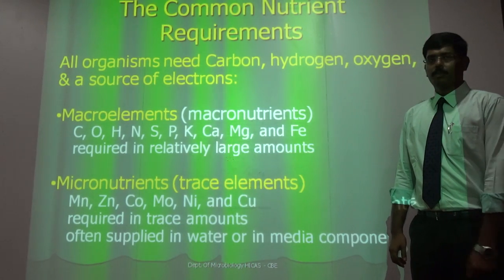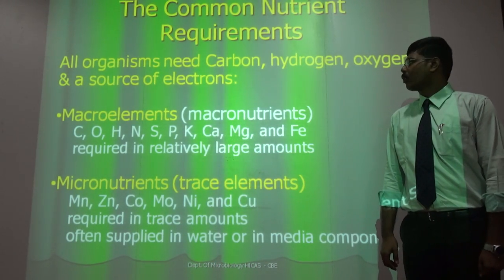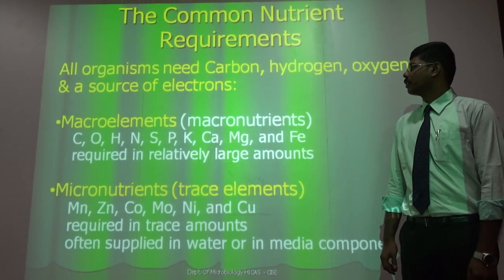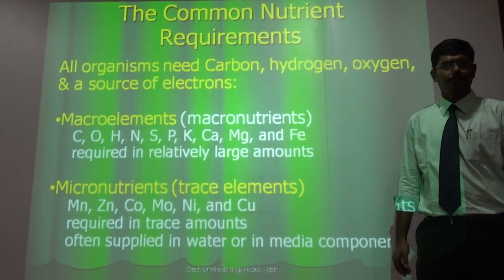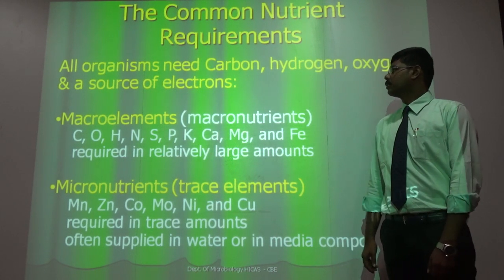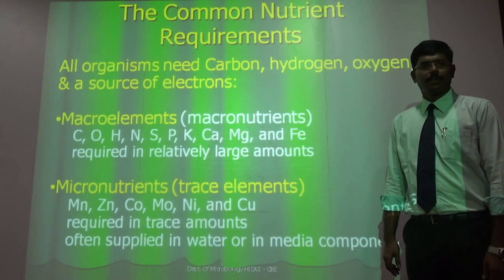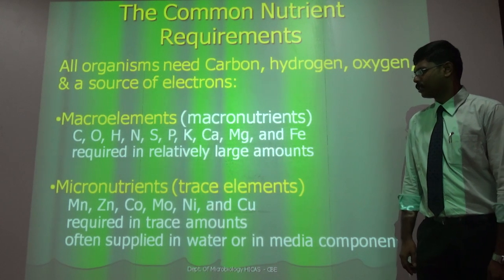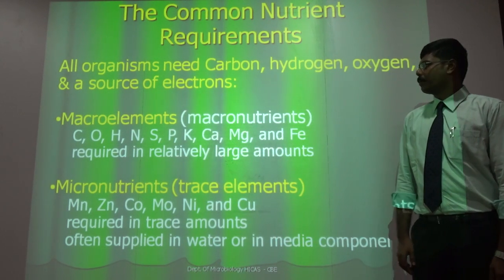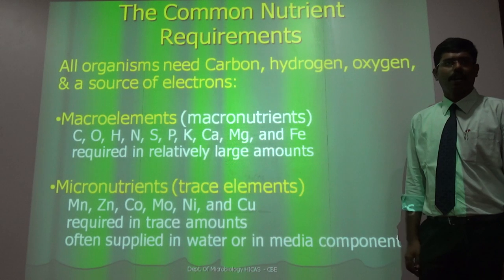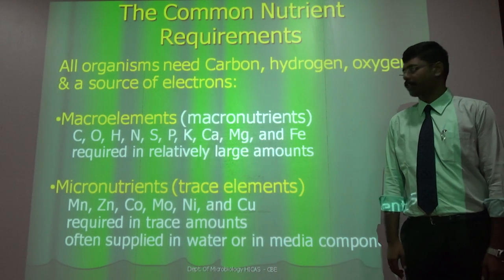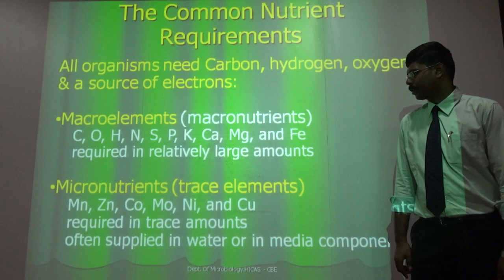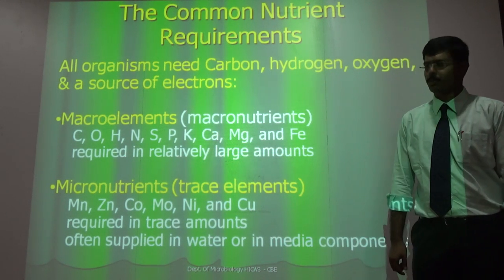What are the common nutrient requirements? In the world, all living organisms need carbon, hydrogen, and a source of electrons for their energy production and their growth. These nutrients can be divided into two major classes: macroelements and micronutrients. On a 100-point scale, 95 will be for macroelements and 5 for micronutrients, because micronutrients are needed in very trace amounts.